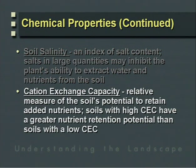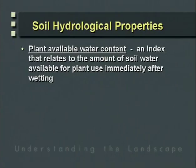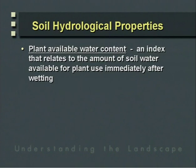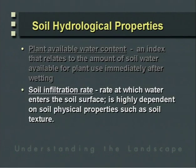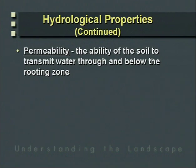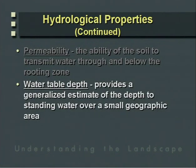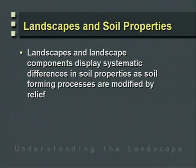Soil hydrological properties vary considerably as a function of topographic variations. Plant available water content — an index of water available for plant growth — varies systematically along hill slopes. Infiltration rates vary as a function of hill slope, soil texture, coarse fragments, and vegetative cover. Permeability is the ability of the soil to transmit water. Water table depth influences redox relationships within a soil profile. Landscapes and landscape components display systematic differences in soil properties as a function of soil forming processes, which are in turn modified by topographic variations.